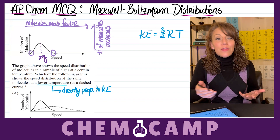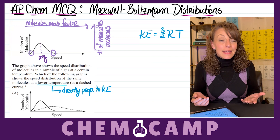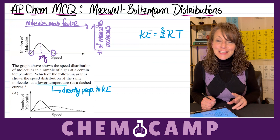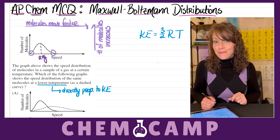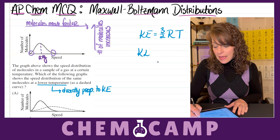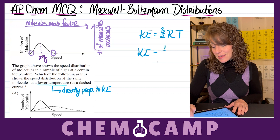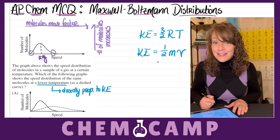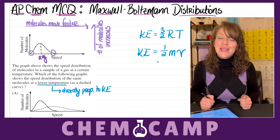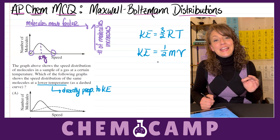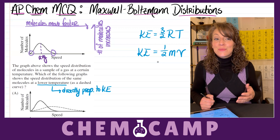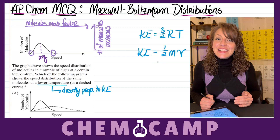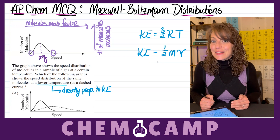Now the graph doesn't talk about kinetic energy, but it does talk about speed. There's a second formula you should be aware of for kinetic energy: kinetic energy equals one half the mass times velocity, or speed. So if your kinetic energy decreases because you see a decrease in temperature, then the velocity is also going to decrease.